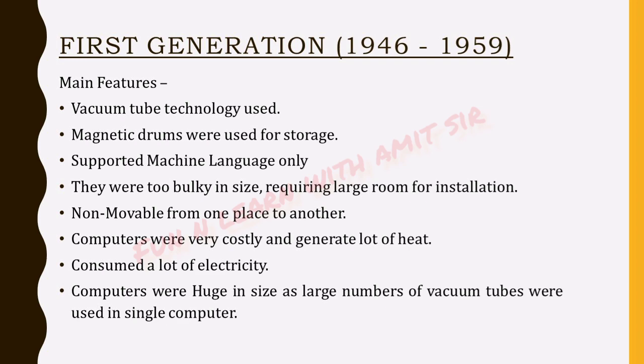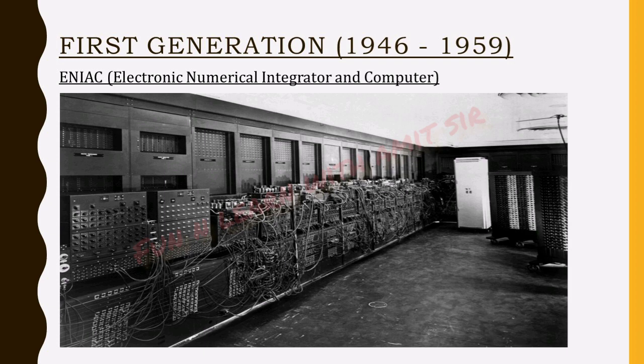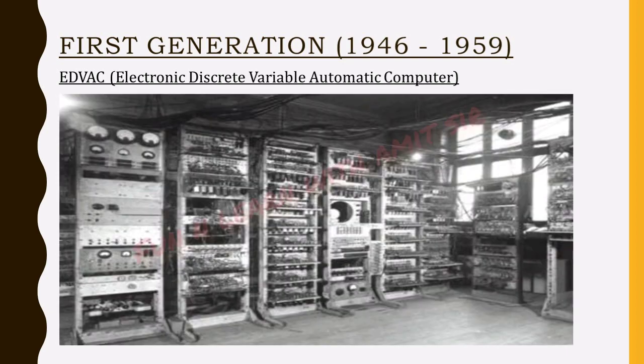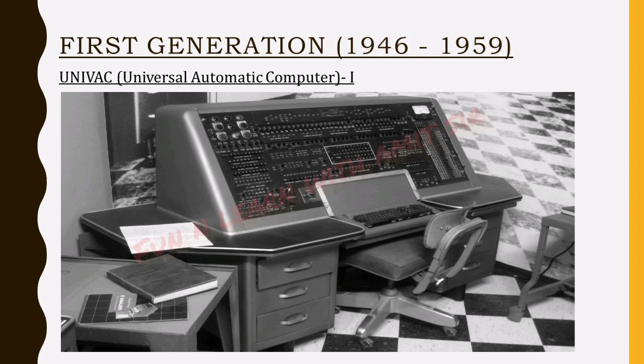Now take a look at some examples of first generation computers. This is ENIAC — Electronic Numerical Integrator and Computer. The next one is EDVAC — Electronic Discrete Variable Automatic Computer. One more popular example is UNIVAC 1 — Universal Automatic Computer.